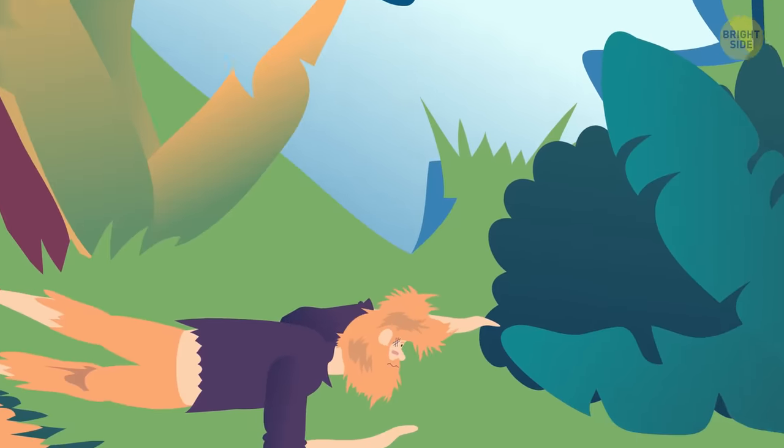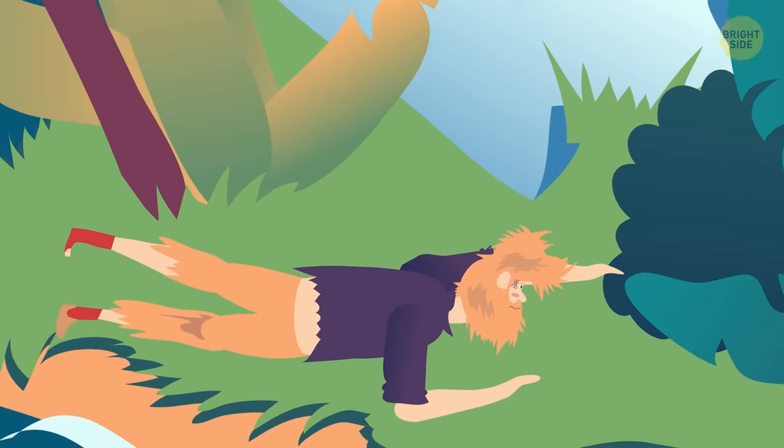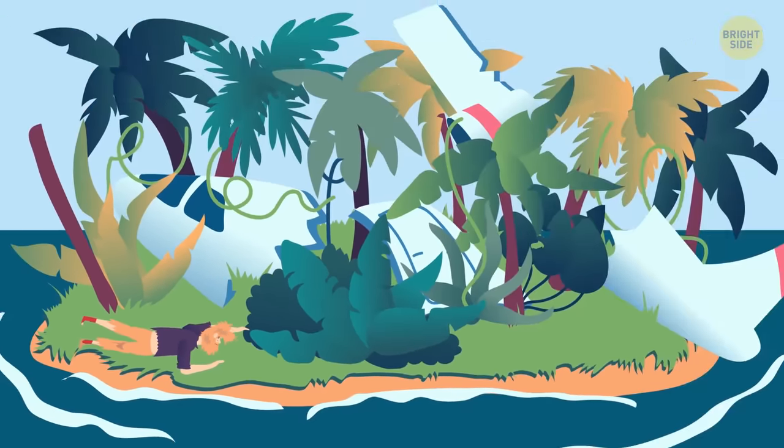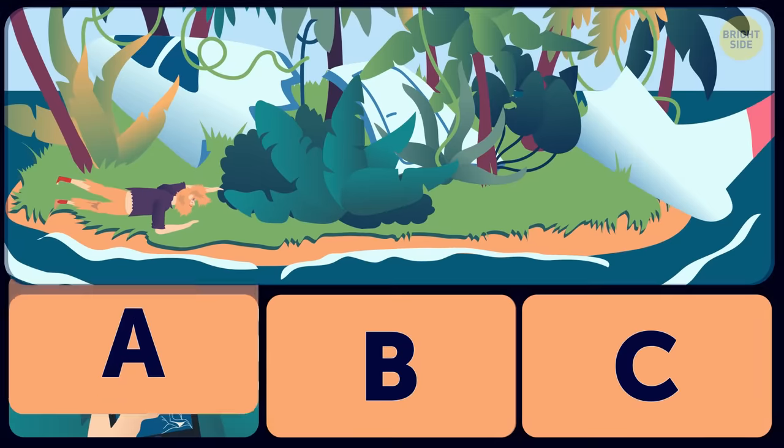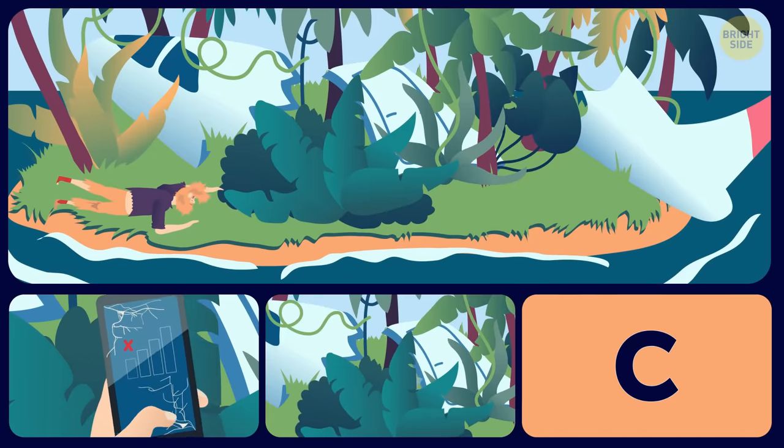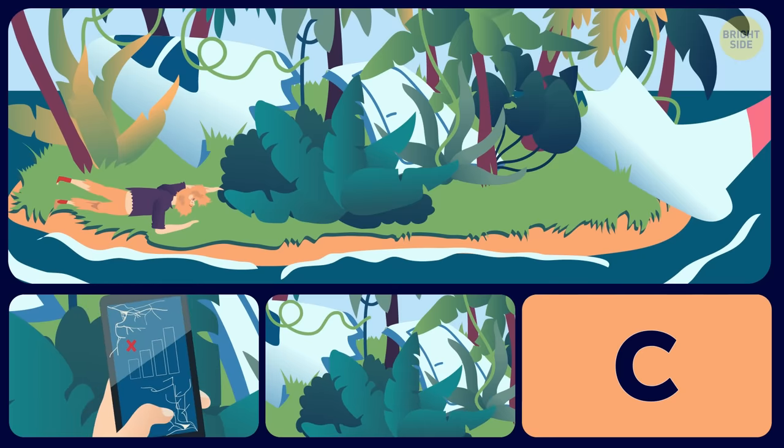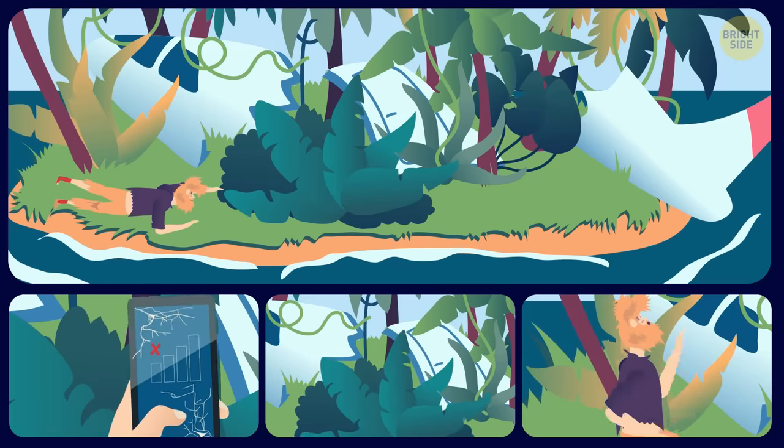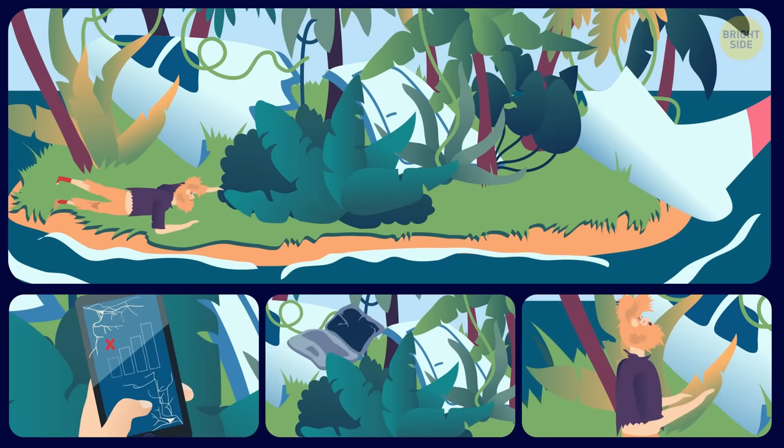10. If your plane crash-landed in the middle of a forest, and you were the sole survivor, what would you do? A. Try to get a phone signal to call for help. B. Search the debris for anything that could help you survive. C. Rush away from the area as fast and as far as you can.